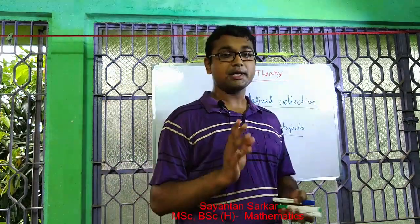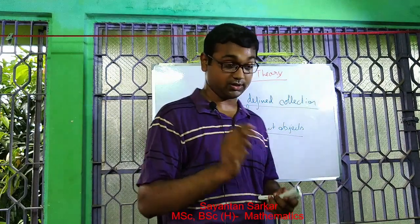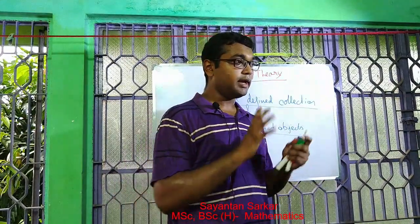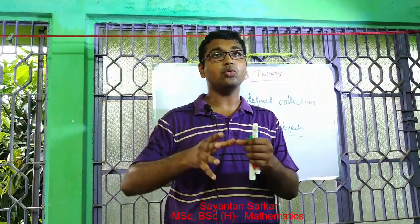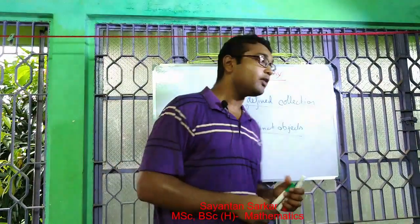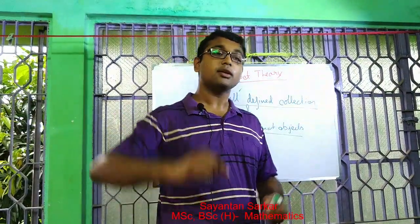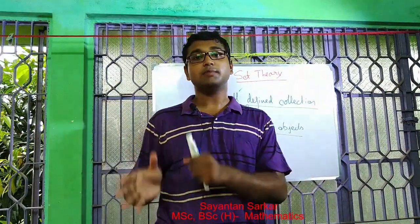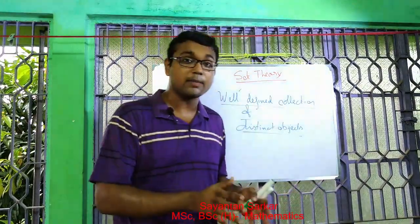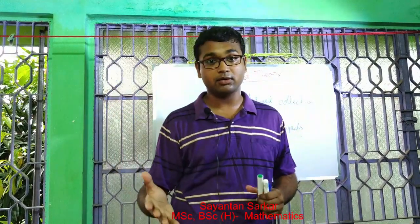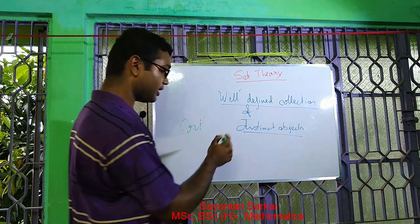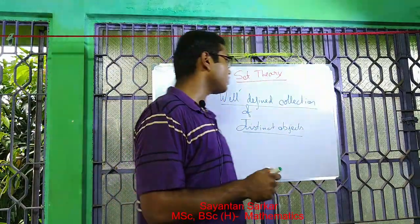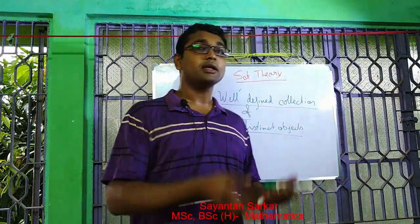Let me explain each word with utmost importance. First, what is well-defined? Well-defined means they are defined according to some rule in a very proper way. For example, a cricket kit should contain only things related to cricket. There should be gloves of a batsman or wicket keeper, but not gloves of a football goalkeeper. So if a cricket kit contains a football, this collection is not well-defined.